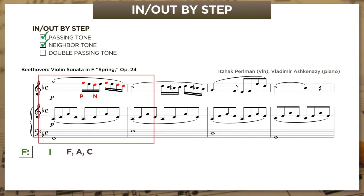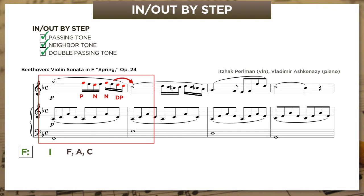The second non-chord tone is a neighbor tone—E, the lower neighbor—moving away from F and back again. Then there's the upper neighbor, G. But the last two red notes are two non-chord tones in a row, moving by step in a single direction: a double-passing tone. We use it to connect chord tones a fourth apart—here, F and C—with E moving to D, neither part of the F major chord, but both clearly moving en route to the stable C.